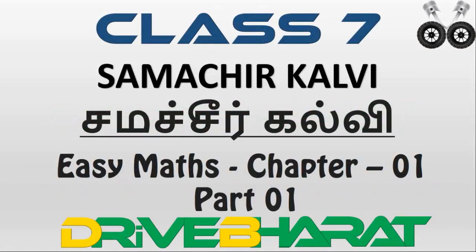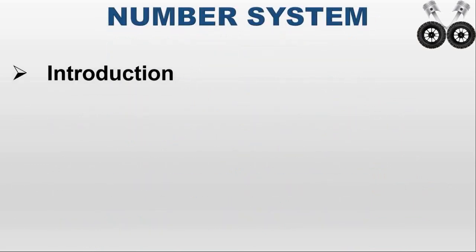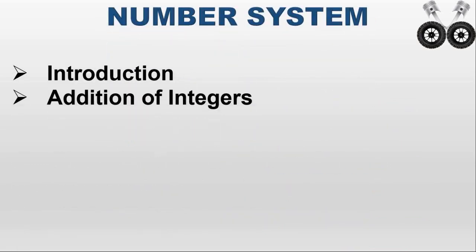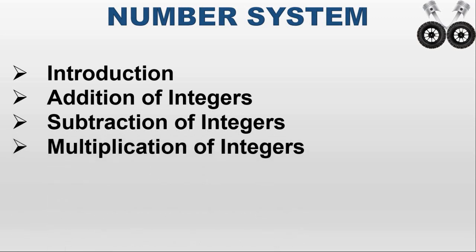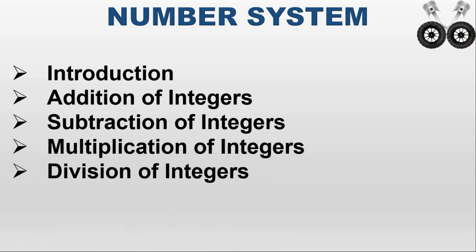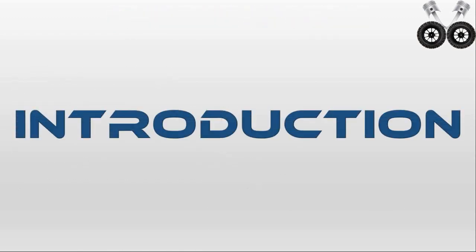Welcome to Class 7 Samacheer Kalvi Easy Max for Everyone, Chapter 1, Part 1: Number System. The topics to be covered in this chapter are introduction, addition of integers, subtraction of integers, multiplication of integers, division of integers, and fundamental operations of integers. We will begin with the introduction.